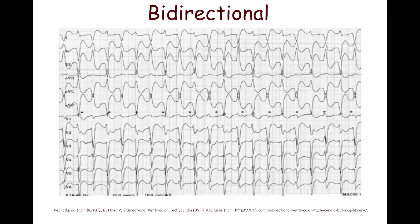Bidirectional ventricular tachycardia is a rare specific ventricular tachycardia with a beat-to-beat alteration in dual QRS morphology. It is strongly associated with digoxin toxicity.